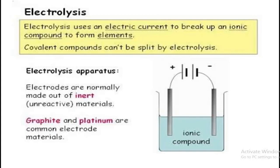Only very specific compounds can be broken by electricity — ionic compounds — and the condition is they should be in the molten or aqueous form. If we recall our knowledge of bonding, ionic compounds are made up of ions and are good conductors of electricity when dissolved or in the molten form. In those two states, ionic compounds split to form free-moving ions.